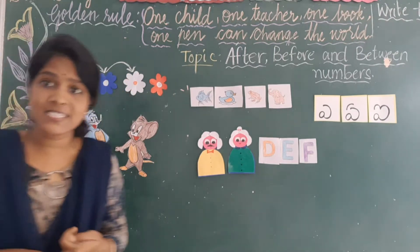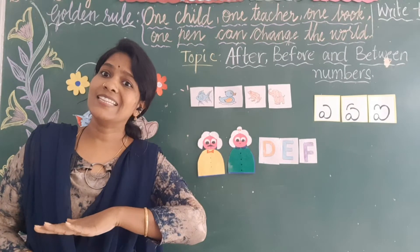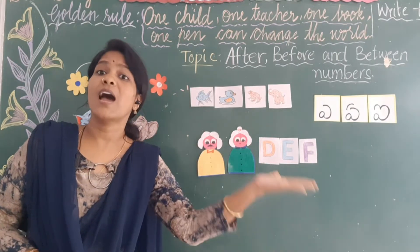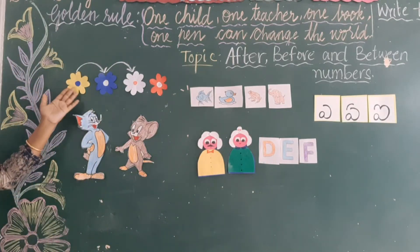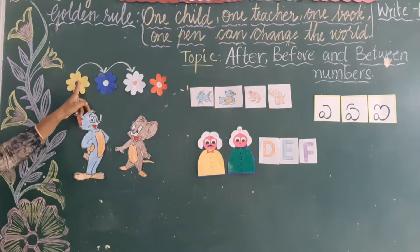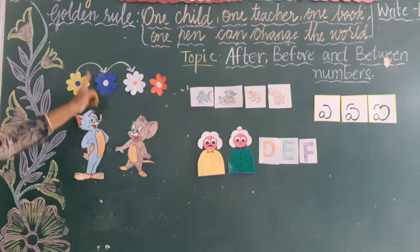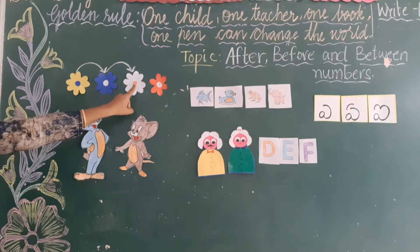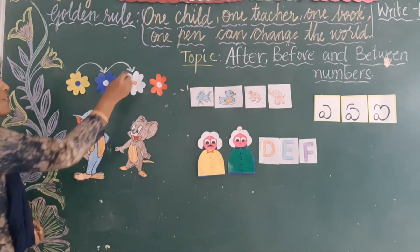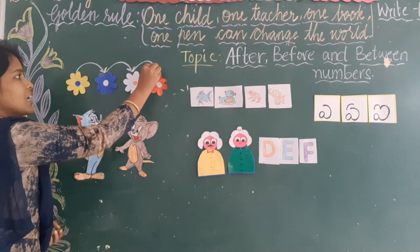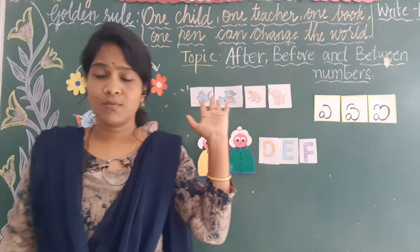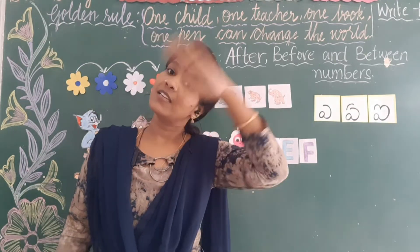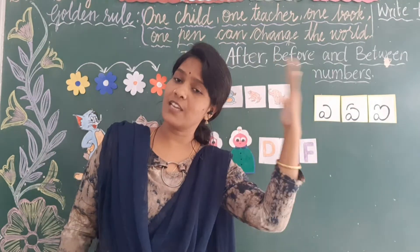After means — in Telugu you can say 'Taru Vata'. After means Taru Vata. So first I cut yellow colour flower, and next I cut blue colour. After blue colour I cut white colour flower, and after white colour flower I cut red colour flower. Did you understand? What is the meaning of after? After — Taru Vata. Okay?